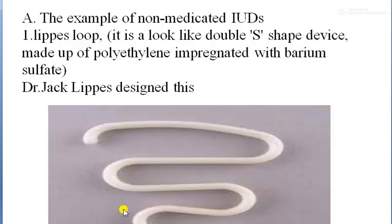Non-medicated IUDs are specially designed to prevent fertilization. They are known as non-medicated because no hormonal medications are inserted. The first example is the Lippes loop, which has an almost loop-like structure — that is why it is called the Lippes loop.